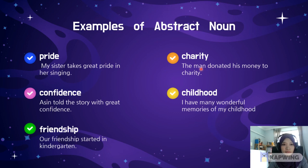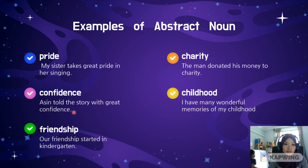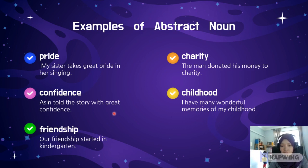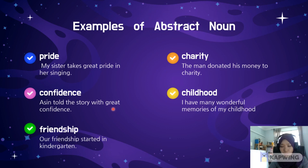Look at the examples of abstract nouns. The first one is 'pride'. Example sentence: 'My sister takes great pride in her singing.' The second one is 'confidence'. 'Asin told the story with great confidence.' You know what confidence is, right? It means keyakinan. Can you really touch confidence? Can you really measure it? Boleh ukur tak confidence tu?